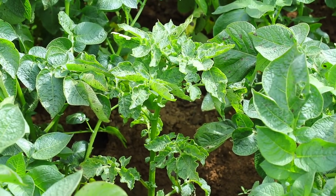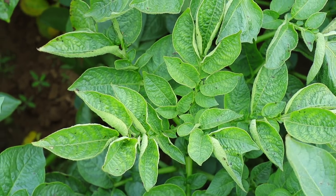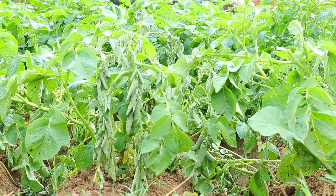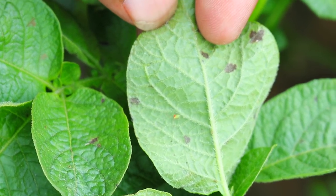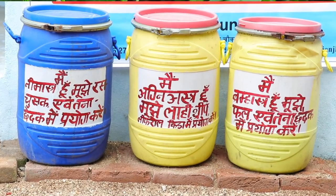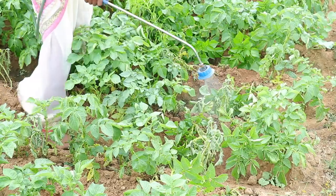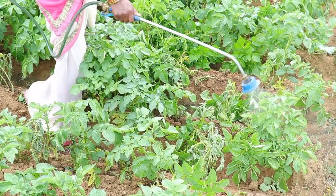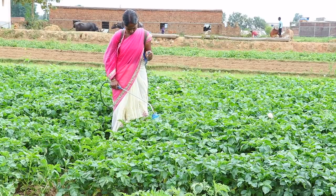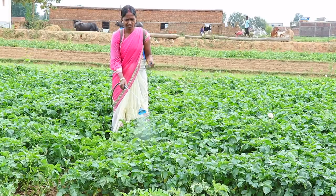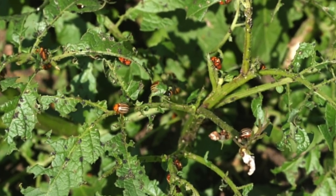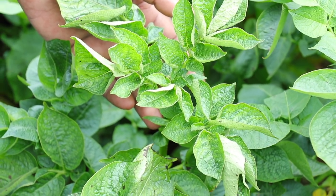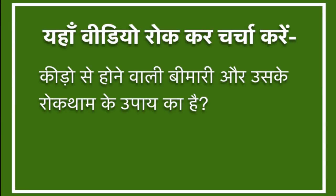मोजाइक भी आलू की फसल में लगने वाली एक महत्त्वपूर्ण बीमारी है। इस रोग में पत्तियाँ ऊपर की तरफ मुड़कर सिमटने लगती हैं और बाद में पीली पड़कर सूख जाती हैं। इस बीमारी में पौधों की वृद्धि भी रुक जाती है और पौधा बौना होने लगता है। मोजाइक कीड़ों द्वारा फैलता है। नियमित रूप से निमास्त्र, अग्न्यास्त्र और ब्रह्मास्त्र का छिड़काव करते रहने से आलू की फसल में लगने वाले प्रमुख कीड़े — जैसे रस चूसने वाले पतंगे, पत्ती पर फुदकने वाले पतंगे, थ्रिप्स एवं कुत्रा — आने की संभावना न के बराबर रह जाती है और फसल को नुकसान से बचाया जा सकता है।